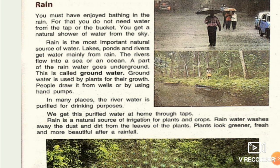Rain is the most important natural source of water. Lakes, ponds, and rivers get water mainly from rain. The rivers flow into a sea or an ocean.